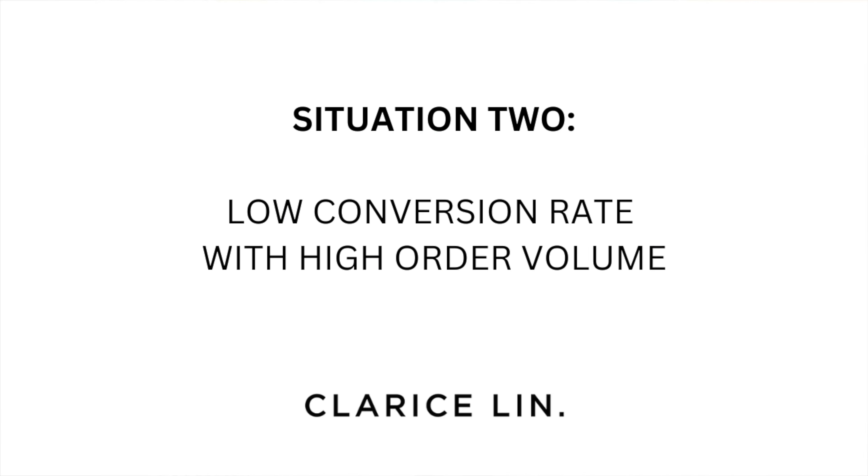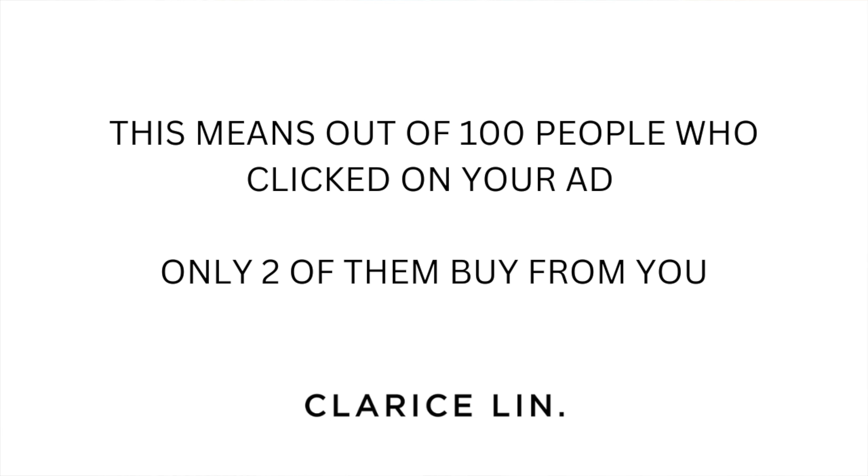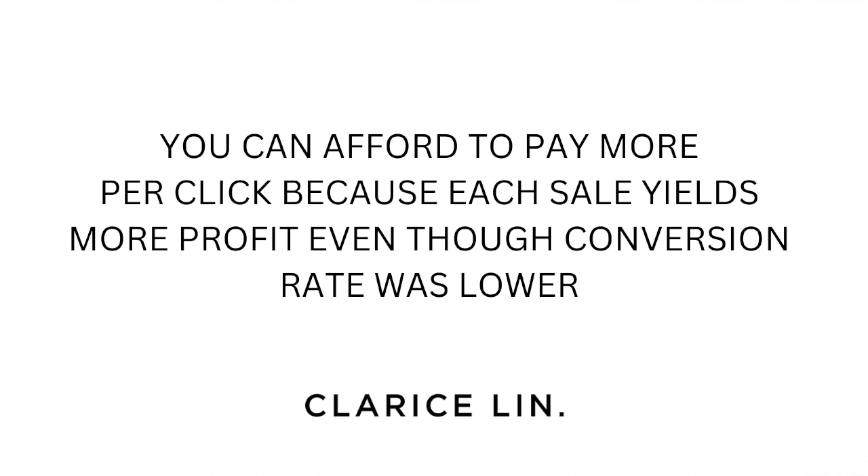Situation two: low conversion rate, high order volume. Now imagine your conversion rate is only 2%, but the people who do buy are buying 10 mugs at a time instead of just one. Each customer buys 10 mugs, so one sale gives you $100 profit: 10 mugs times $10 profit per mug equals $100. You get two sales out of 100 clicks, each sale for 10 mugs: two sales times $100 equals $200 profit. Maximum bid per click equals $200 divided by 100 clicks, which is $2 per click. Even with a low conversion rate, each sale is much bigger, so you can afford to bid up to $2 per click.